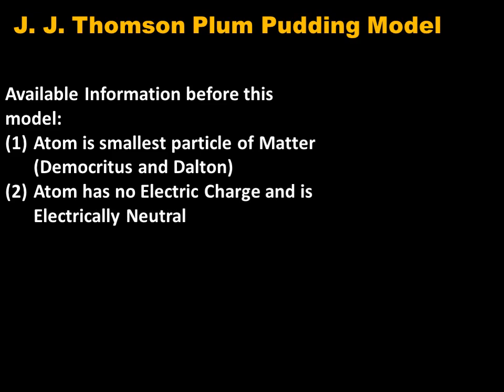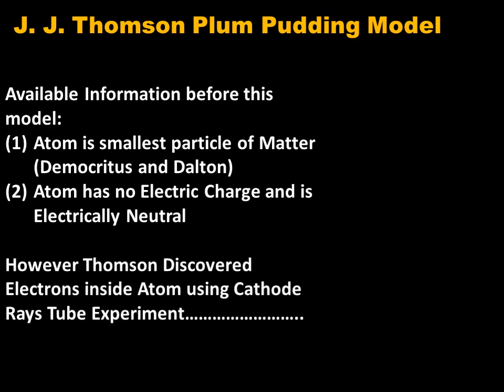The second available piece of information was that the atom has no electric charge and is electrically neutral. However, Thomson discovered electrons inside the atom using the cathode ray tube experiment. The discovery of the electron by J.J. Thomson challenged the acceptability of Dalton and Democritus's idea that atoms are indivisible and cannot be created or destroyed.